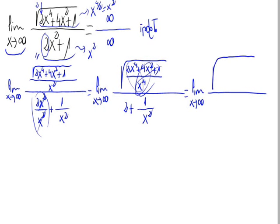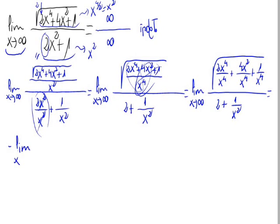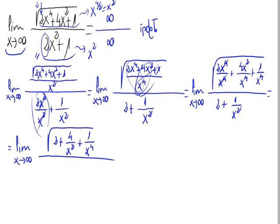Now let's simplify the numerator. This is the limit when x approaches infinity. We would have 2x to the fourth divided by x to the fourth — I'm writing it this way to help you see how to simplify. Plus 4x squared divided by x to the fourth, plus 1 divided by x to the fourth. The denominator stays the same. Now let's simplify: 2x to the fourth divided by x to the fourth is 2, plus 4x squared divided by x to the fourth is 4 divided by x squared, plus 1 divided by x to the fourth. The denominator stays the same.